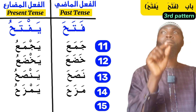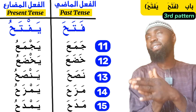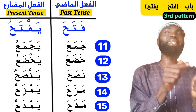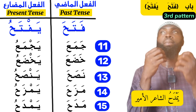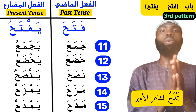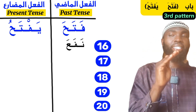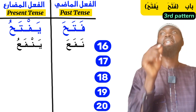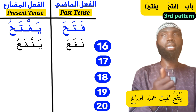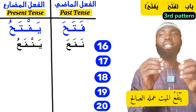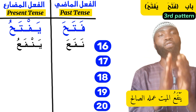Another word which falls under this category is madaha — 'he praised.' The present tense is yamdahu. The dal, which is the second letter, maintains its fatah. An example: yamdahu ash-sha'iru al-amira — 'The poet is praising the emir.' Another word is nafa'a — 'he benefited, he gave benefit.' The present tense is yanfa'u, because the fa' which is the second letter must carry fatah. An example: yanfa'u al-mayyitu amaluhu as-salih — 'The dead will be benefited by his good deeds.'